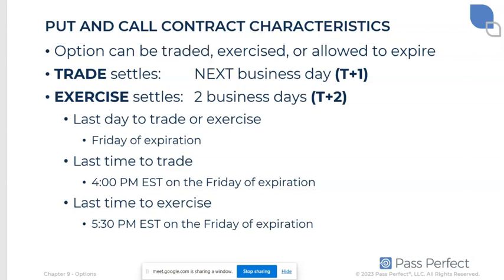Options are tradable financial instruments with a one business day settlement. Remember, most things are T+2 — trade date plus two — but government bonds and options have a one-business-day settlement. If I bought an option today on Monday, settlement date is tomorrow. If I exercise the option, that's like trading the stock itself — in that case, it's a two business day settlement like normal. The last day to trade an option or exercise it is the third Friday of the month. The last time to trade it is 4 p.m. Eastern time, when the New York Stock Exchange closes.